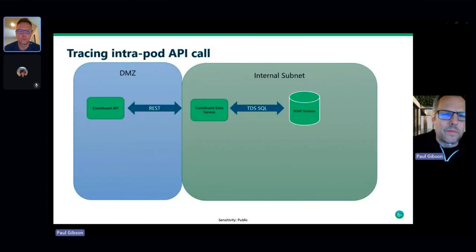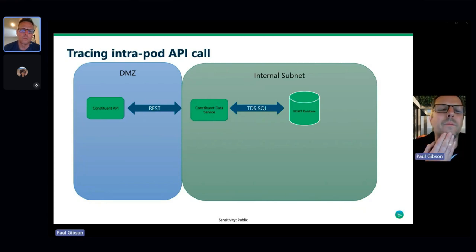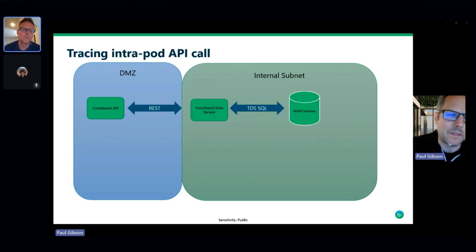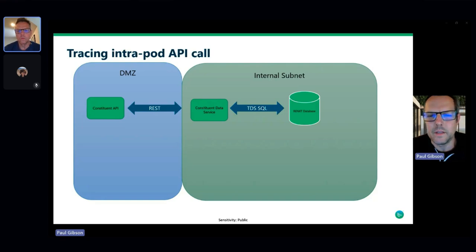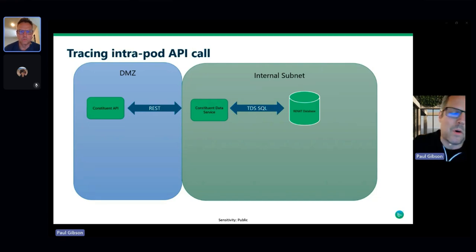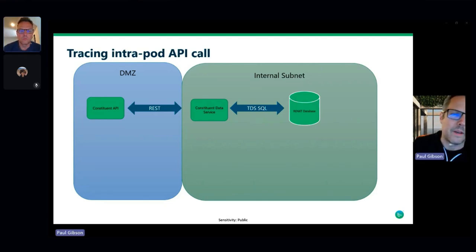Now we're inside the pod. Traffic has hit the pod, and here's a view of how it looks. In what's called the DMZ, the constituent API service receives the call. That service doesn't directly talk to the database; instead it calls the constituent data service, which then uses the TDS protocol to talk to the database. The data service is on an internal subnet — not accessible from the internet, only from the DMZ. We have very elaborate network security groups and firewall rules to control subnet access, maintained for compliance as a best practice in segmenting data access layers.